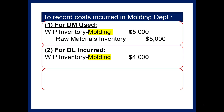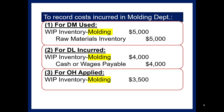To record the direct labor, debit Work in Process Inventory - Molding for $4,000, and credit Cash or Wages Payable for $4,000. To record the overhead applied, debit Work in Process Inventory - Molding for $3,500, and credit Manufacturing Overhead, just like you would in a job order system.